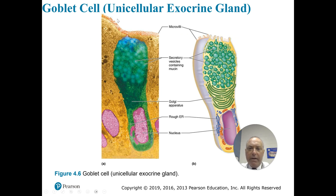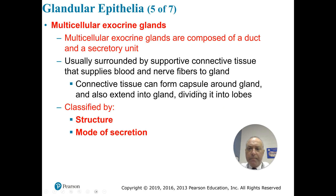Here we have a goblet cell — a unicellular exocrine gland. There is the lumen of the gland, and secretory vesicles getting ready to exocytose. The contents of the cell go out the apical portion of the membrane. We've got the nucleus in the basal portion.